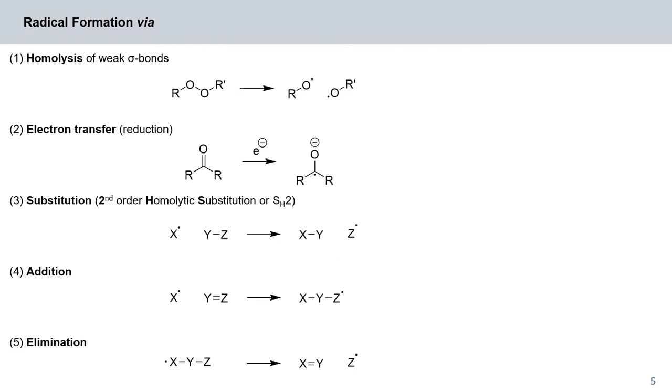There are several ways how to form radicals and we will go through each of these five examples given here very briefly and in more detail on the following slides. So, for example, we can form radicals via the homolysis of weak sigma bonds. So here we have a bond between two neighboring oxygen atoms, which we can cleave by heat or light into two radicals. So let's just draw in our fishhook arrows. We are cleaving the sigma bond between oxygen and oxygen and localizing our radicals, one electron on each of these oxygen atoms.